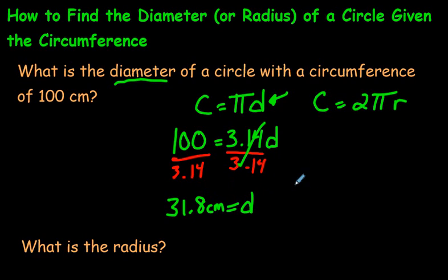Now if someone asked you, what is the radius? What is the radius of this circle? Remember, all you do is take the diameter and divide it by 2 and you'll get the radius. Okay, so you'd go 31.8 divided by 2. And that would give us the radius.